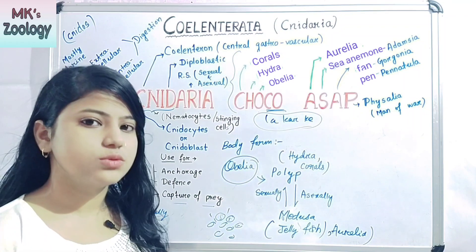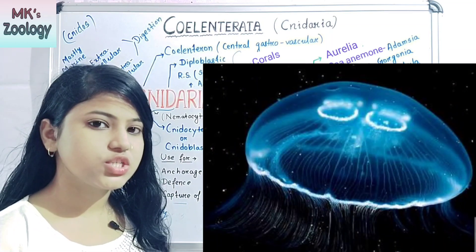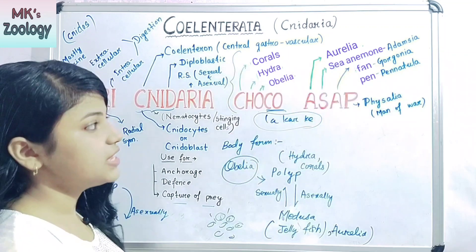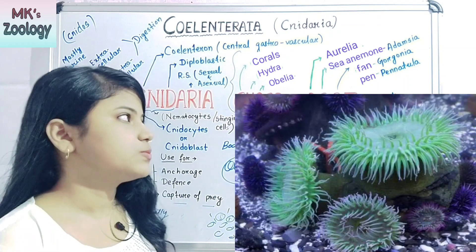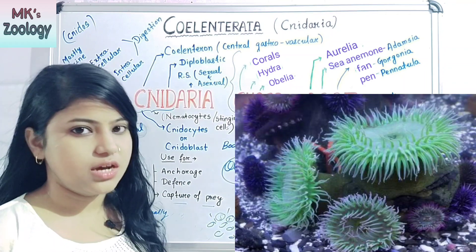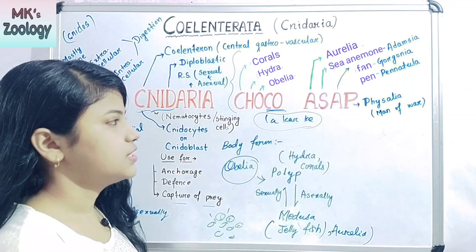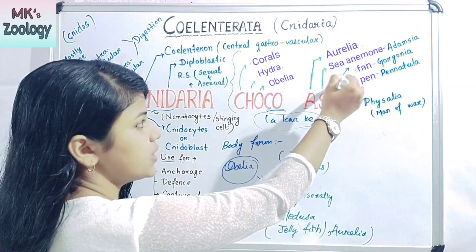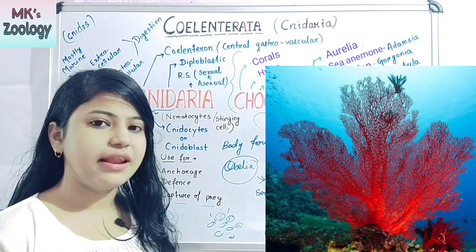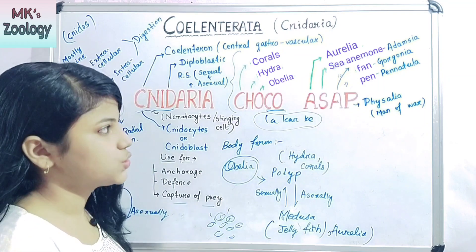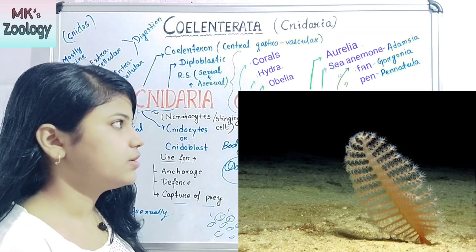In 'as soon as possible,' A stands for Aurelia, which is a medusa and reproduces sexually. The next two letters A-S stand for sea anemone, also known as Adamsia, which is a polyp form. Next is sea fan, which is Gorgonia. Then sea pen, which is known as Pennatula.